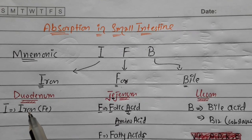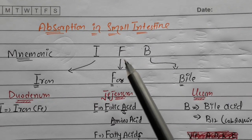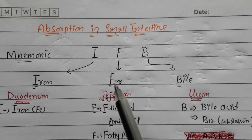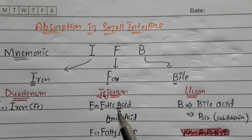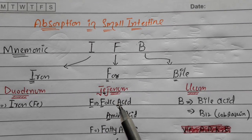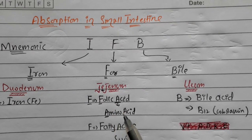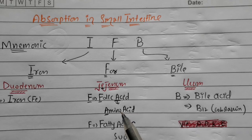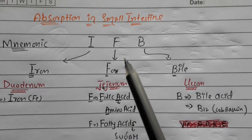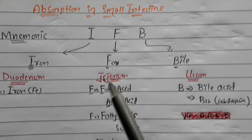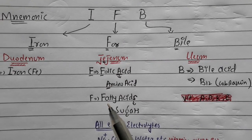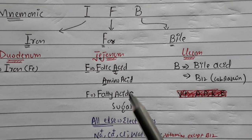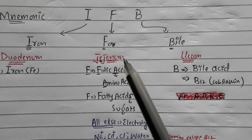The 'F' stands for the jejunum. From 'F', remember folic acid, and from the 'A' remember amino acids — 90% of amino acids are absorbed in the jejunum. 'F' also stands for fatty acid. Additionally, 90% of sugar is absorbed in the jejunum.